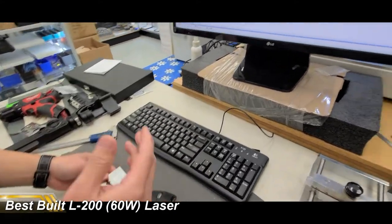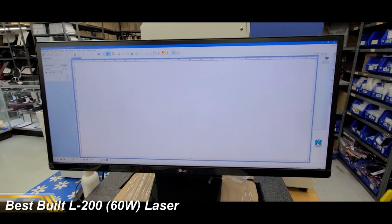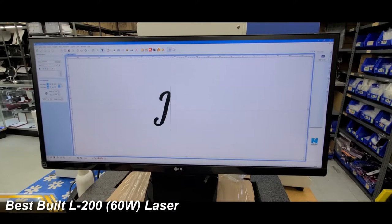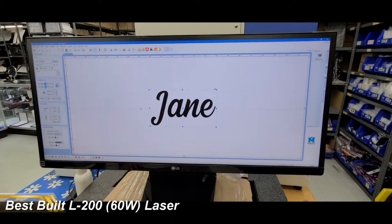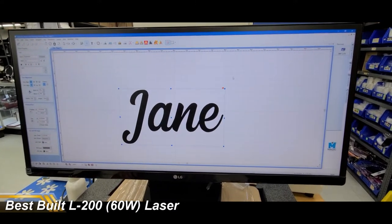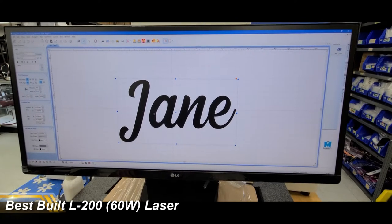I'm going to quickly lay out a basic name on the screen. Let's do a popular name, Jane. I'm going to select it, a little bit bigger. Let's do about 10 by 5 millimeters.